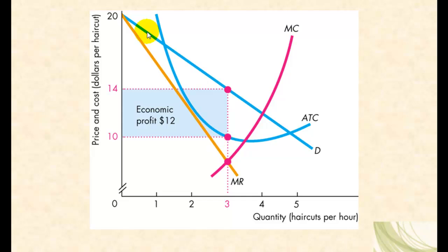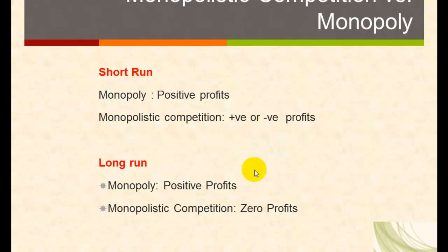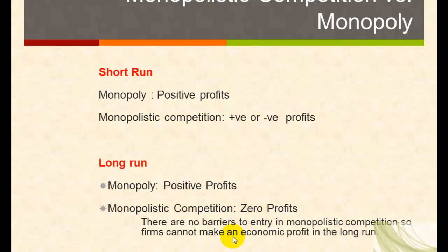Profits are measured by the difference between price and average cost, multiplied by the quantity being produced. Let's look at the differences between monopolistic competition and monopoly in the short run and long run. In the short run, monopoly makes positive profits, and also makes positive profits in the long run. Firms in a monopolistically competitive market may make positive or negative profits in the short run.